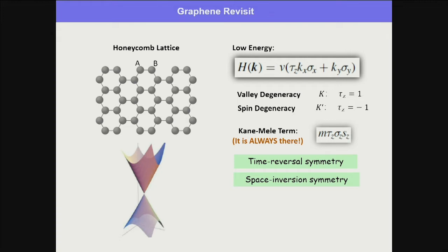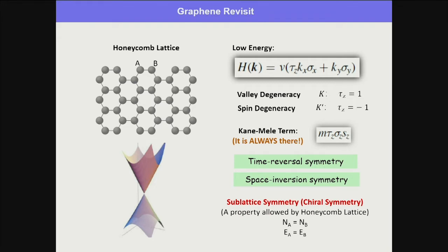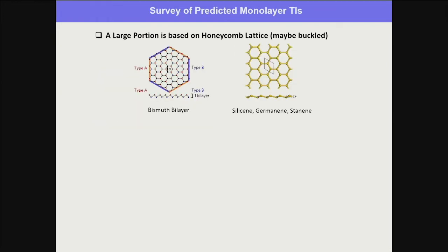What gives you the Dirac point is sublattice symmetry, also called chiral symmetry. The honeycomb lattice gives you A and B sublattices. They are different by chirality if you look at their neighborhood, but in honeycomb they have the same number per unit cell, the same energy because they're identical atoms with the same surroundings — except possibly a rotation. So NA equals NB and EA equals EB. If you check what 2D crystals have been predicted as topological insulators, you'll find a large portion of them are based on honeycomb lattices.